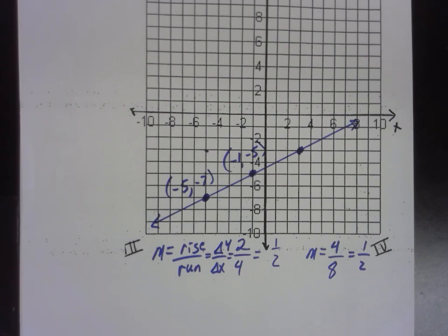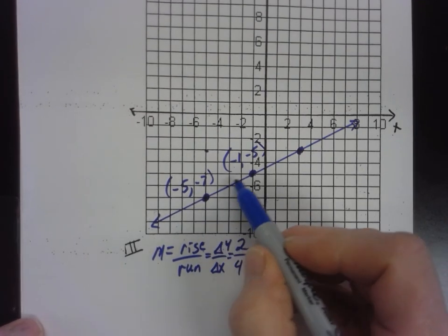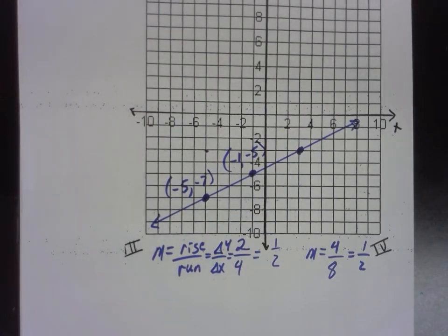The slope of a line is always going to boil down to the same number, regardless of which two points on the line we choose. So let's do another example now.